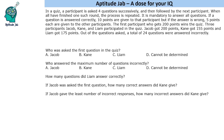This set says there is a quiz in which a participant is asked four questions successively, followed by the next participant. When all have finished one such round, the process is repeated. It is mandatory to answer all questions. If a question is answered correctly, 10 points are given to that participant. If the answer is wrong, 5 points are given to each of the other participants. The first participant to get 200 points wins. Three participants — Jack, Kane, and Liam — participated. Jacob got 200 points, Kane got 155 points, and Liam got 175 points. A total of 24 questions were answered incorrectly.